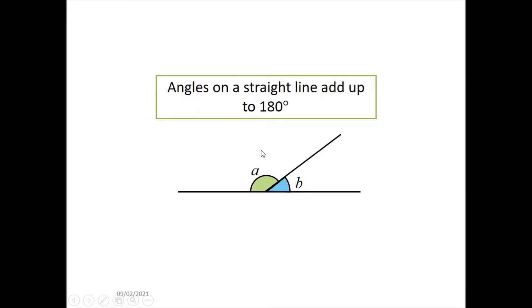So the most important thing I want to show you is that angles on a straight line add up to 180 degrees. So this angle over here, add with this angle over here, would equal to 180 degrees. So in this case, A and B is equal to 180 degrees.